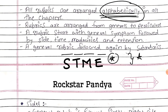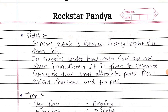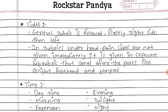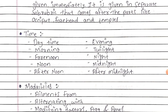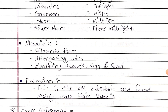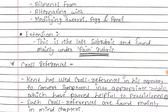Looking into the STME arrangement in detail: first, Sides — a general rubric is followed firstly by the right side, then left. In rubrics under Head pain, sides are not given immediately; they appear in a separate sub-rubric after parts like occiput, forehead, and temples. Second, Time — different times listed are daytime, morning, forenoon, noon, afternoon, evening, twilight, night, midnight, and after midnight. Third, Modalities — elements from alternating with, modifying factors, aggravation, and amelioration. Fourth, Extension — the last sub-rubric, found mainly under the pain rubric.